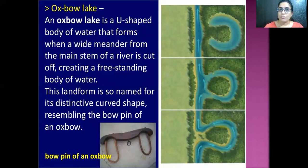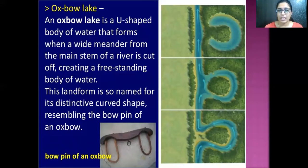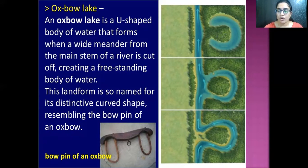The second change that a river causes is the oxbow lake. An oxbow lake is a U-shaped body of water that forms when a wide meander from the mainstream of the river is cut off, creating a freestanding body of water. This landform is named for its distinctive curved shape resembling the bow pin of an oxbow.